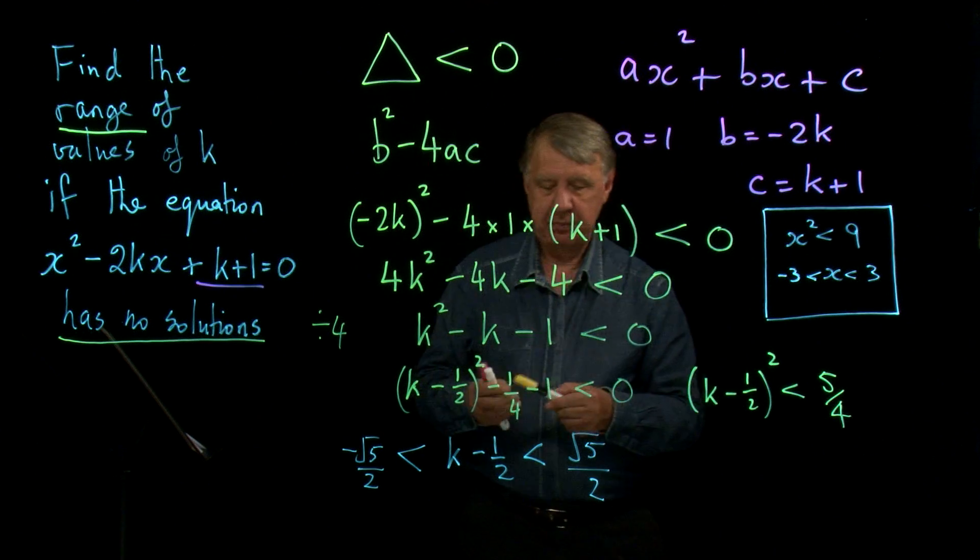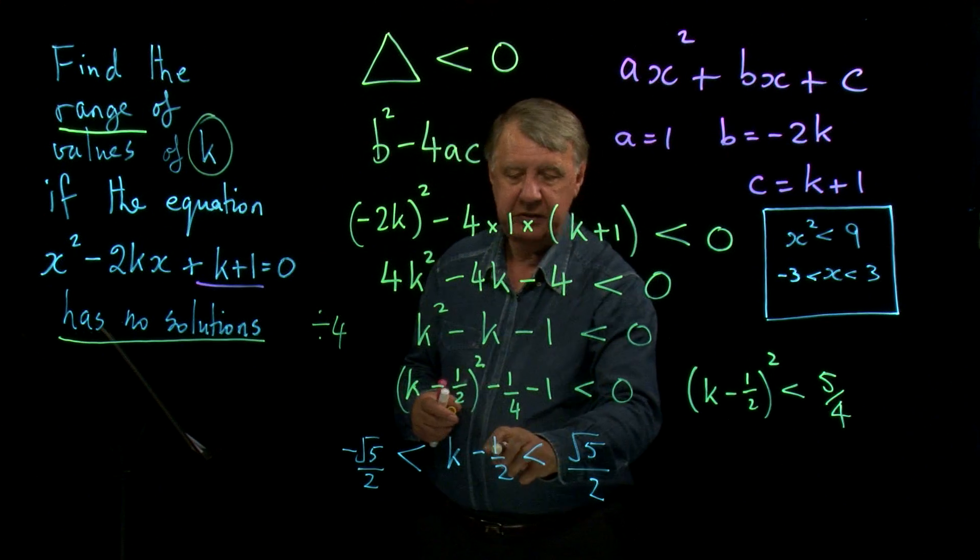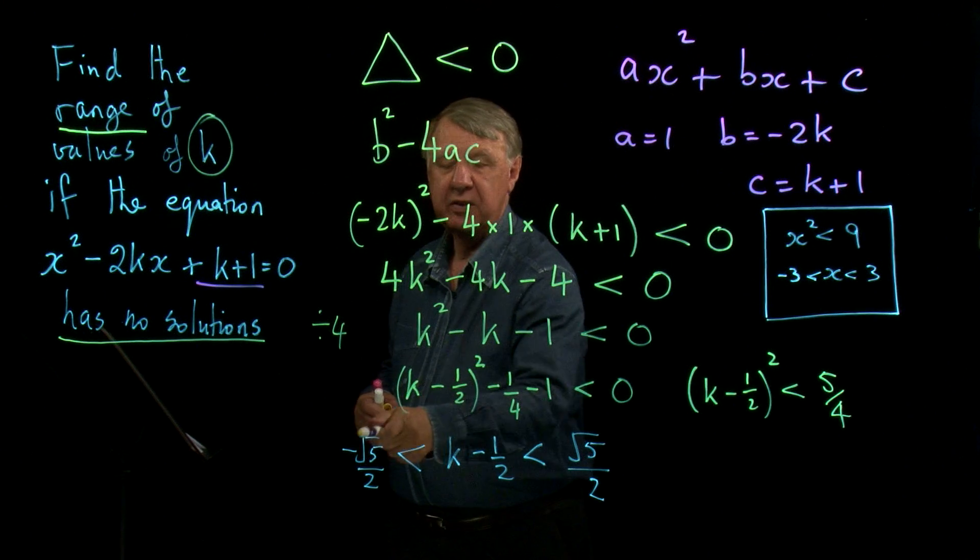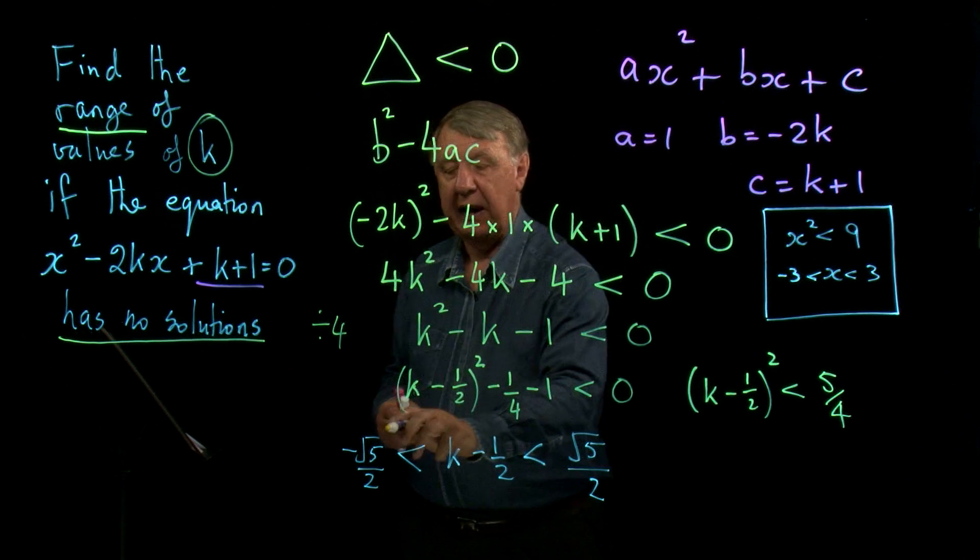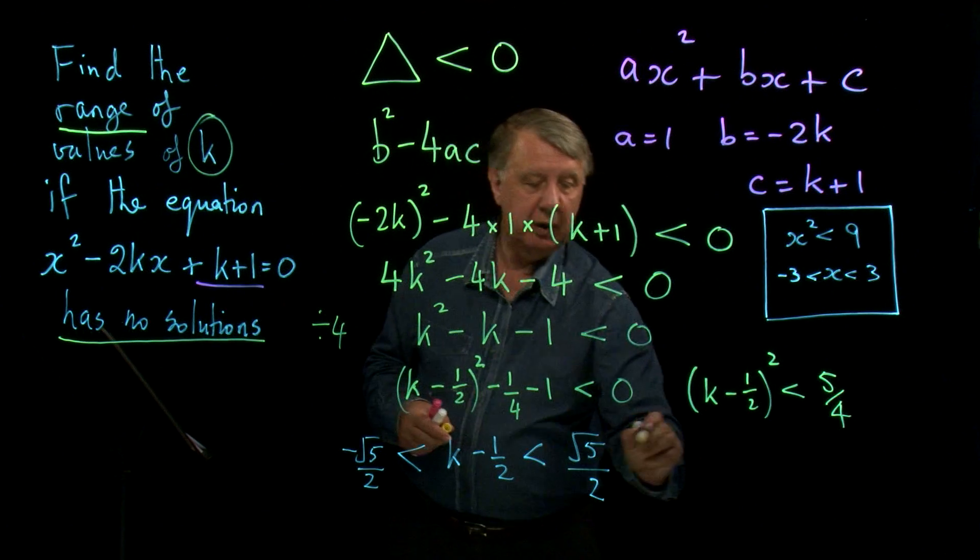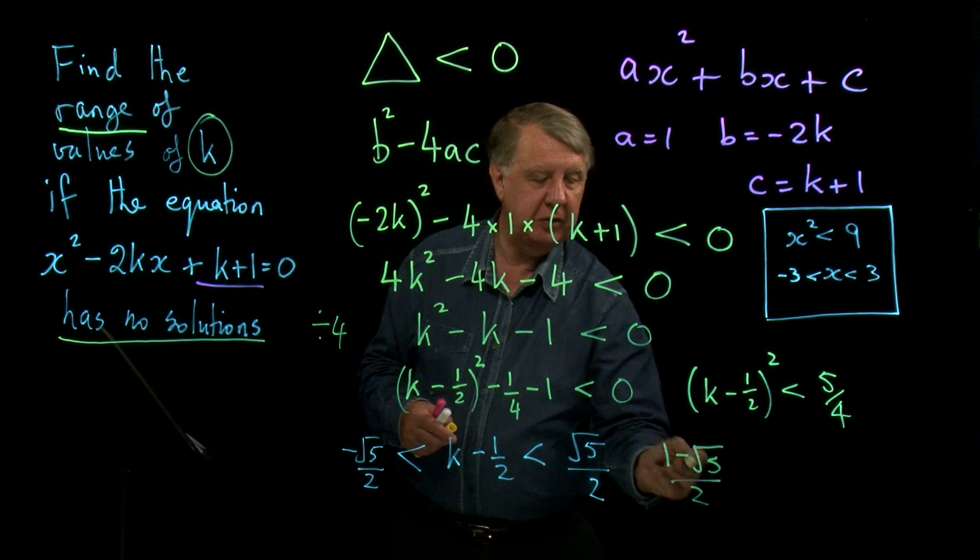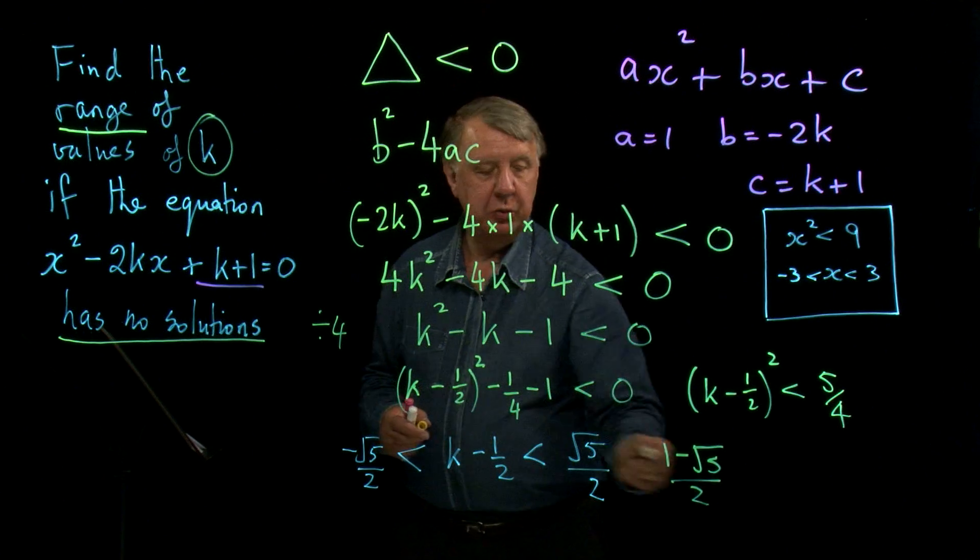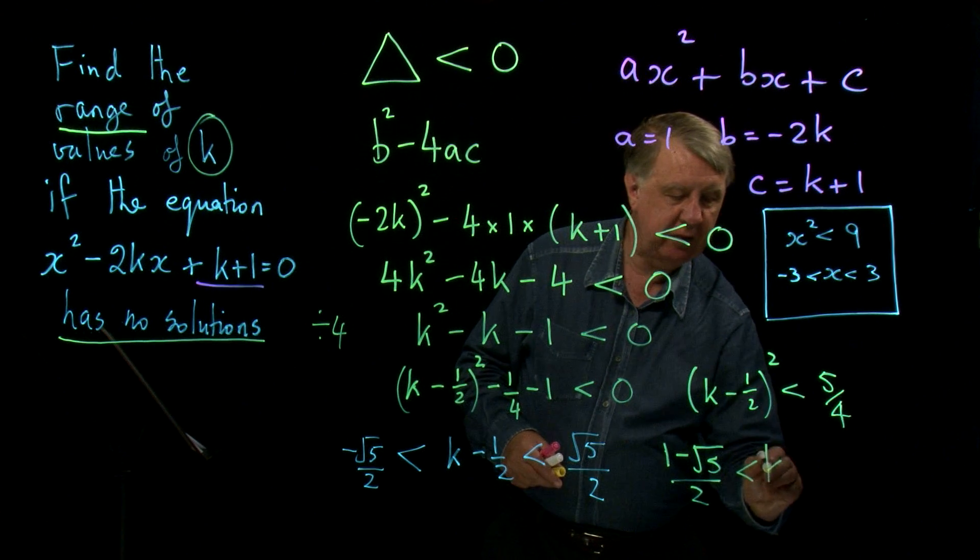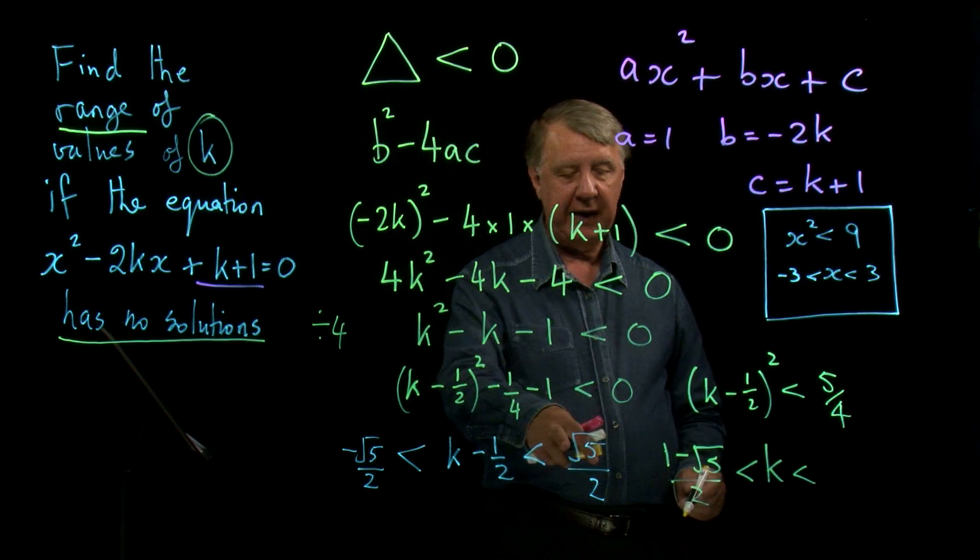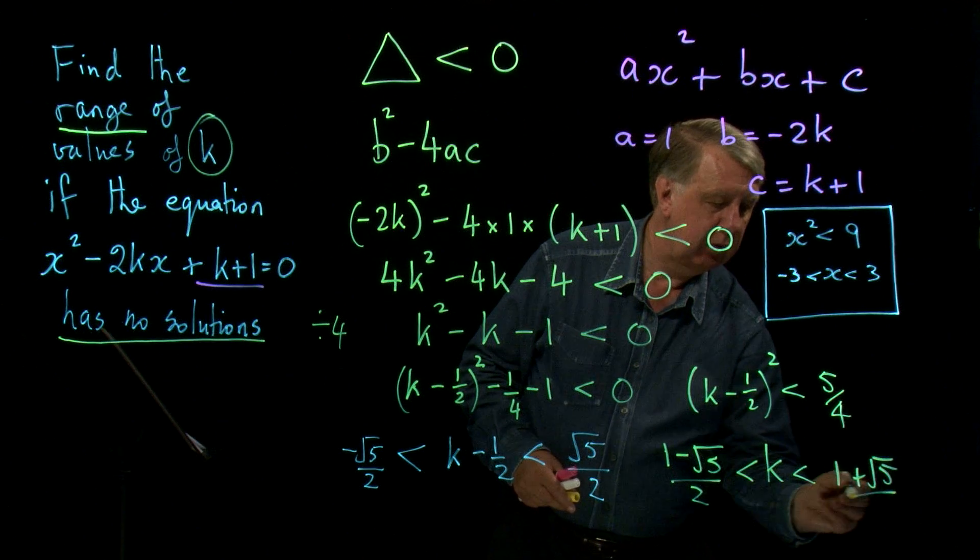So we're nearly there. I want to know the range of values of k. I don't want this negative a half in the way. So I'm going to add a half to each of the three bits of that inequality. So if I add a half to this, I get one minus root five all over two. Because one over two is a half. I'm now merging this into a single fraction. That negative a half disappears giving me k. And then if I add a half to that, I get one plus root five over two.